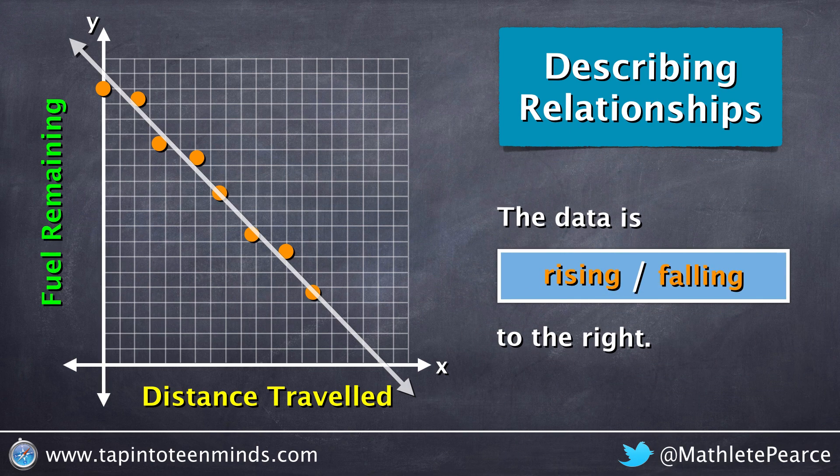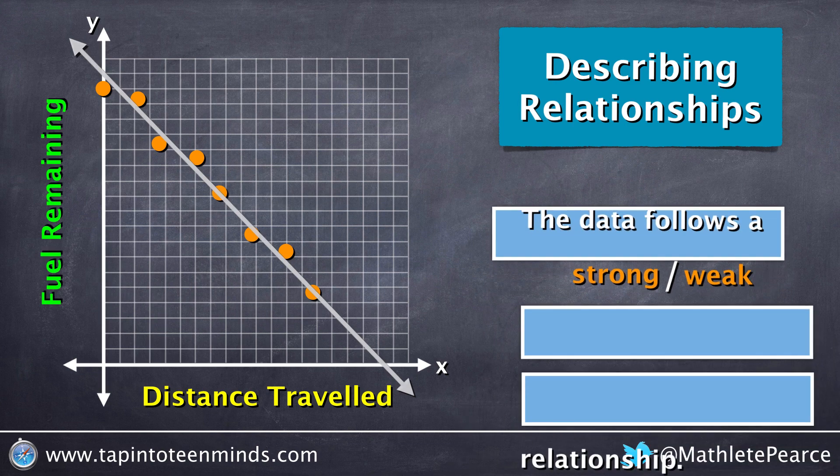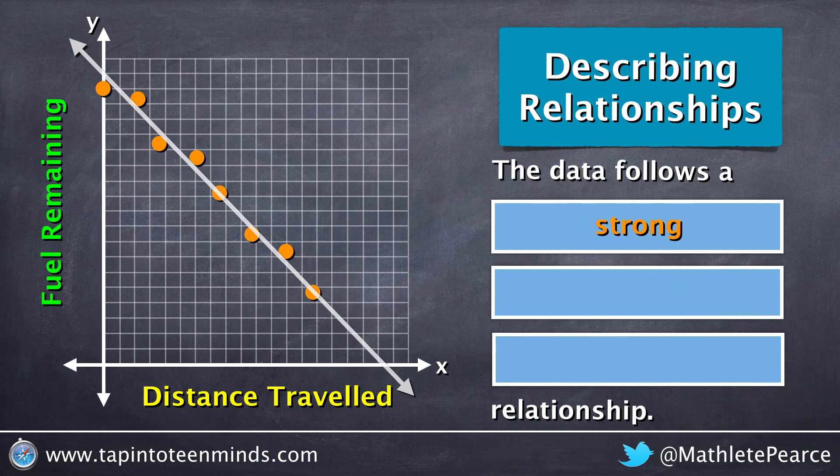We could also say that the data is falling to the right. And again, this relationship seems to be strong since the data is very tight to the line of best fit.